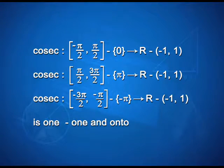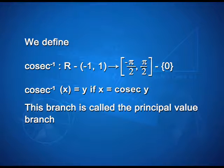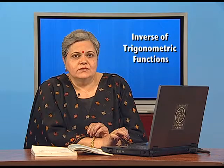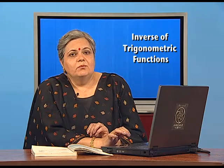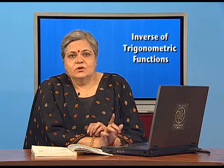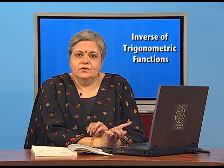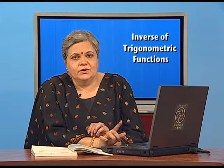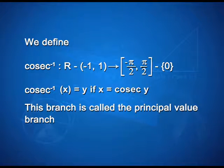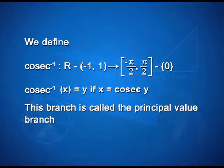We define the principal value branch of cosec inverse over the interval [-π/2, π/2]. Cosec inverse is a function from all real numbers except (-1, 1) — the range of cosec — mapped to [-π/2, π/2] excluding 0, because cosec is not defined at 0. So the principal value branch range is (-π/2, π/2) minus {0}, and cosec⁻¹(x) = y if x = cosec y.